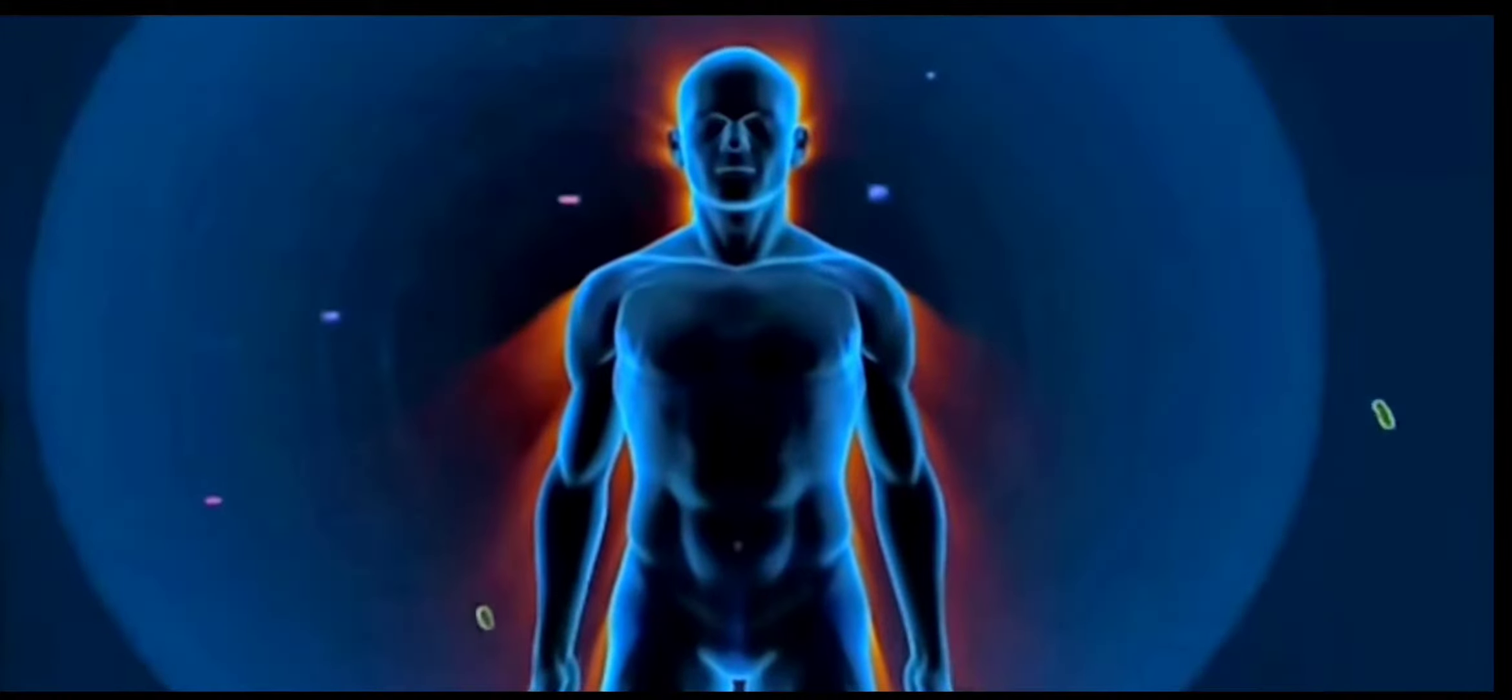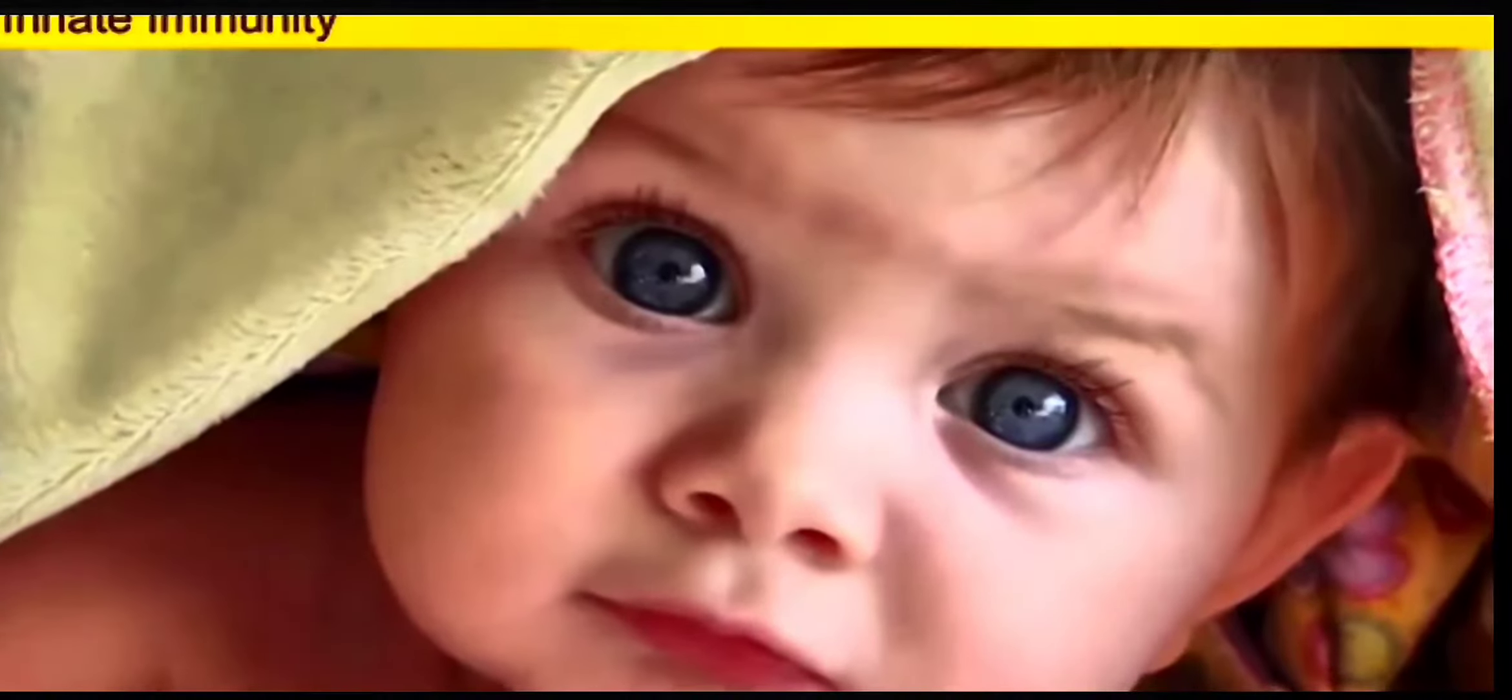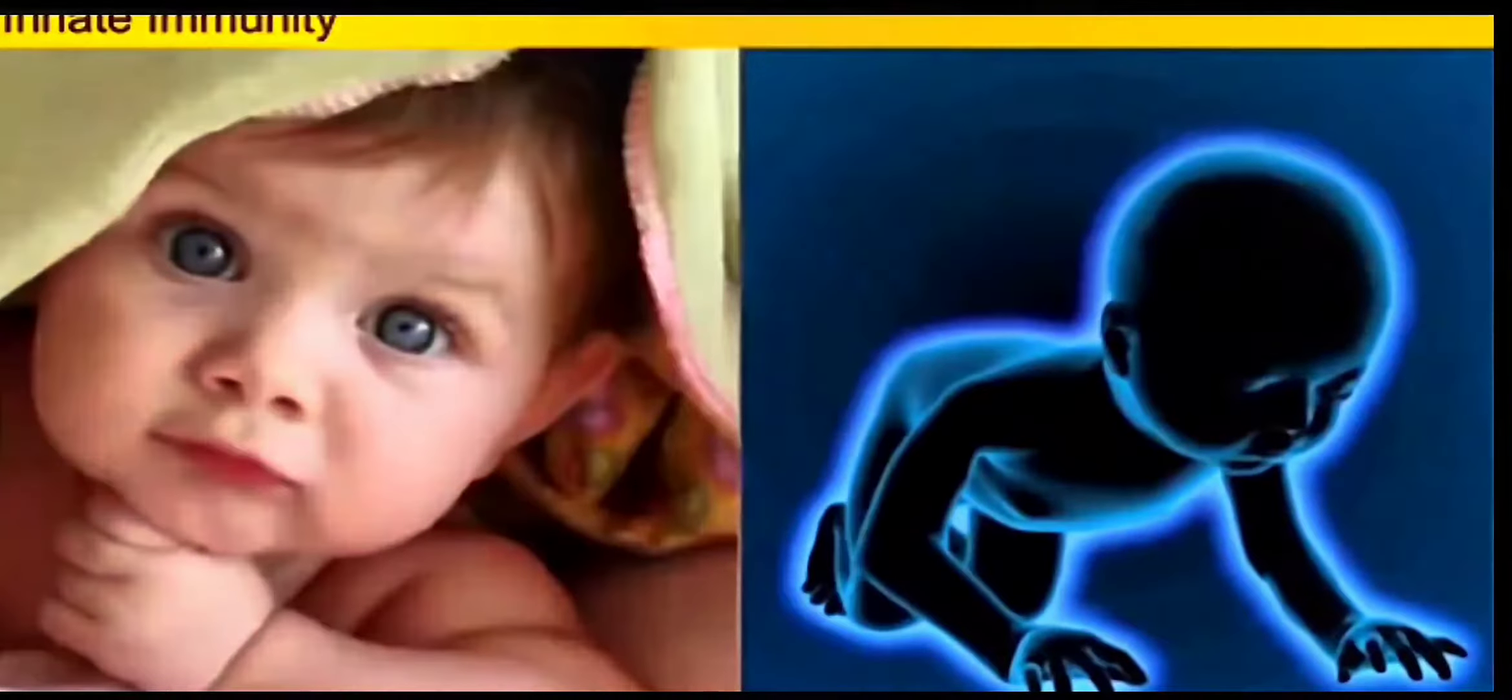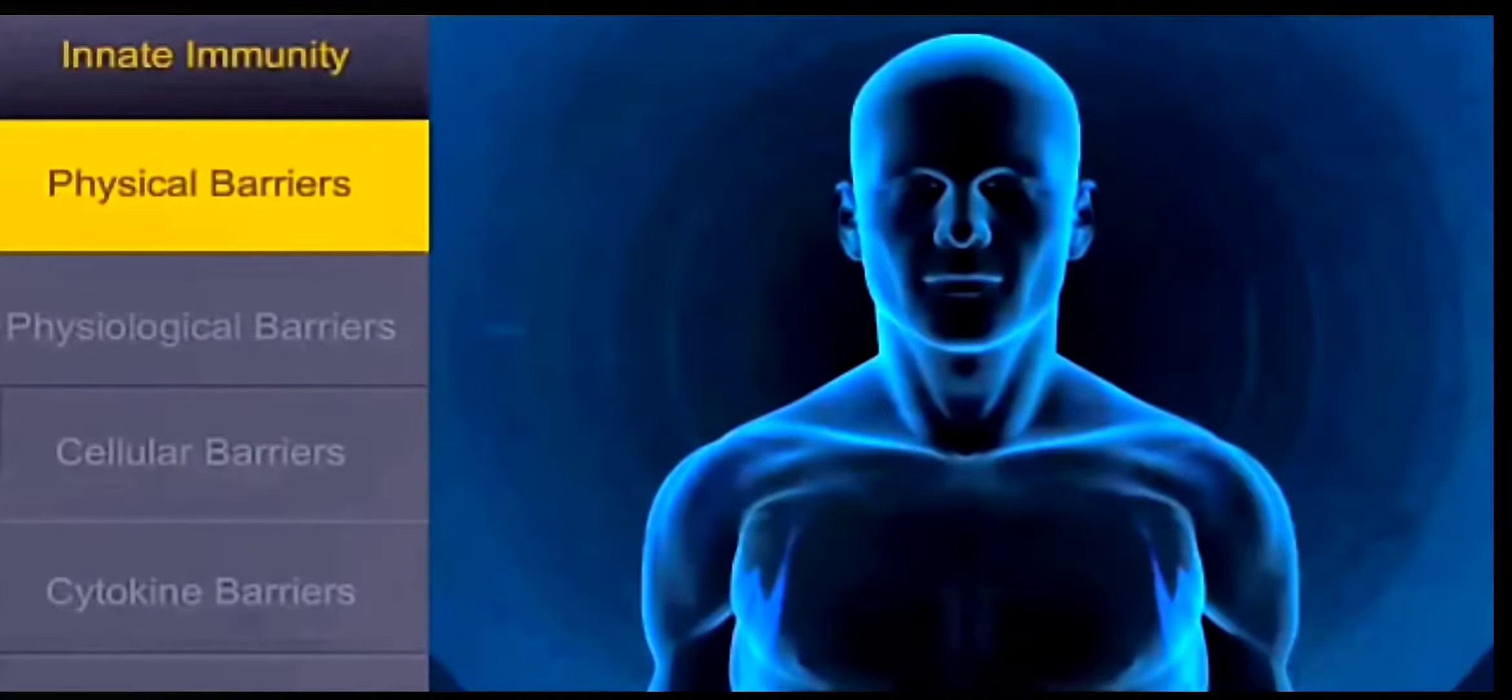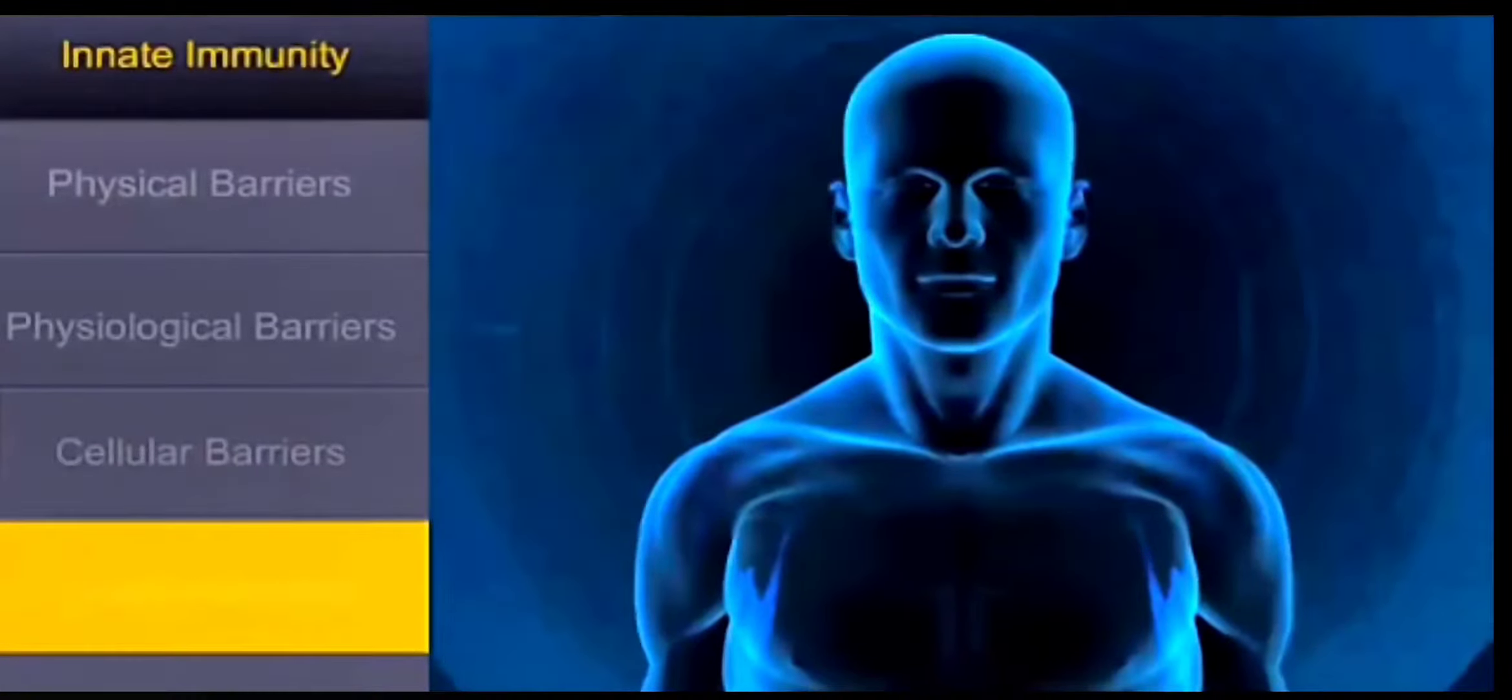So immunity is our ability to fight against infections. This immunity can be of two types: innate immunity and acquired immunity. Innate immunity is that immunity which we get right from birth. Yes, we are born with this immunity. It is non-specific but very helpful. It may be physical barriers, physiological barriers, cellular barriers, or cytokine barriers. Let us study them one by one.